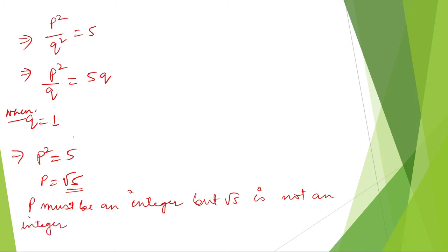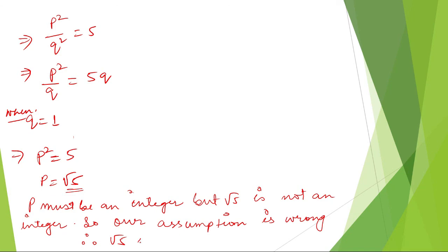So our assumption is wrong. Therefore, we can say root 5 is an irrational number. That's all. Thank you so much. We'll meet you in the next video.